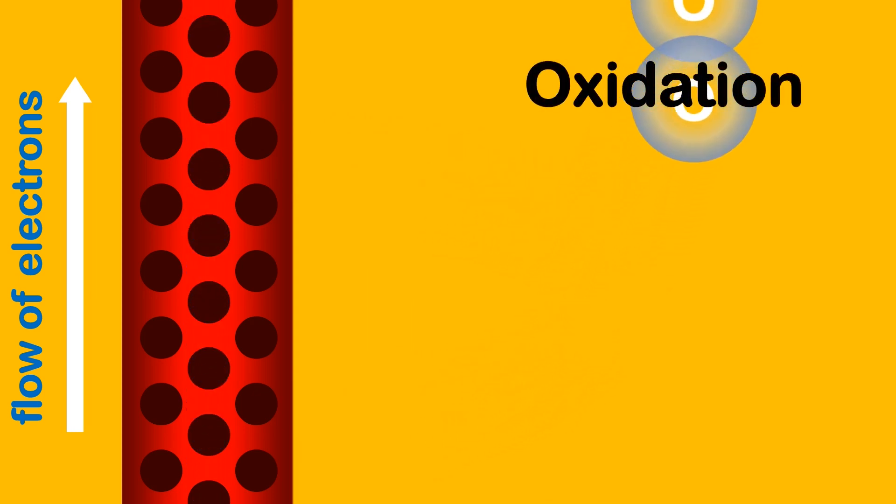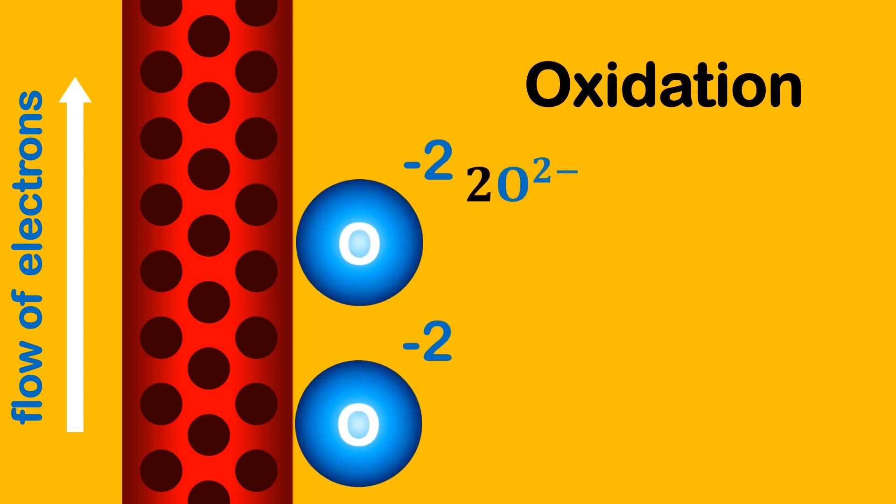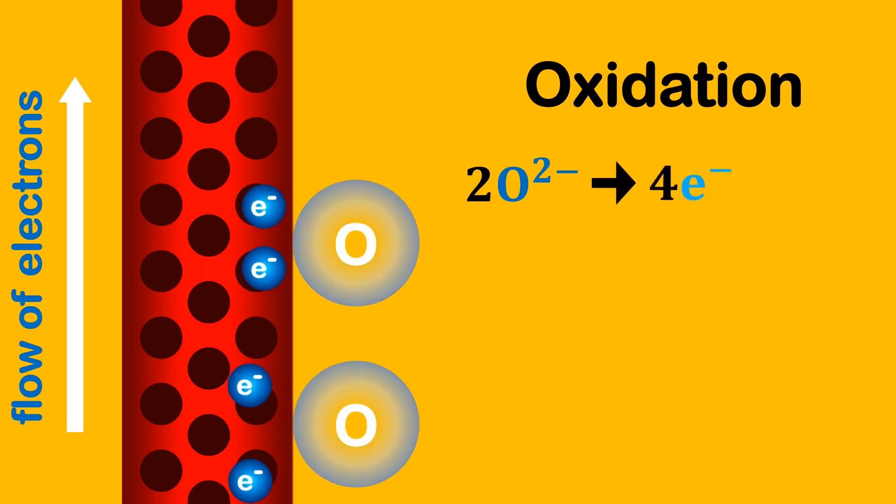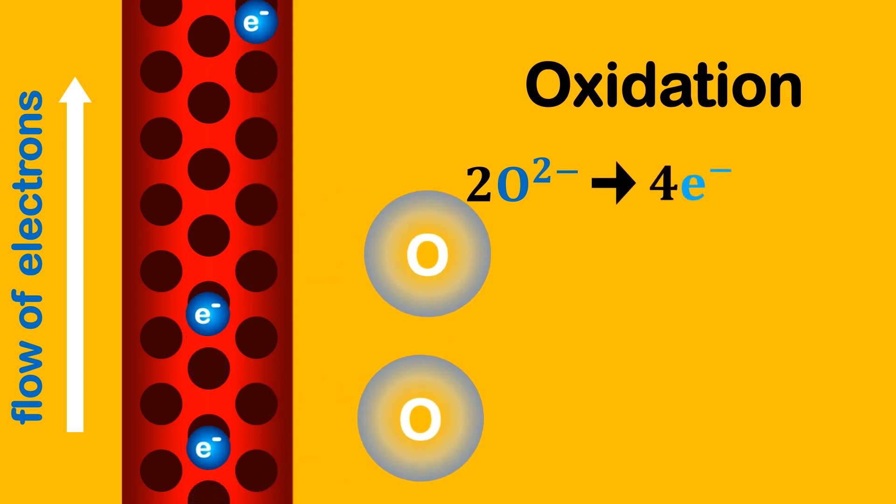When a negative ion loses electrons, this is called oxidation. This ionic half equation shows two minus 2 oxygen ions losing a total of 4 electrons to become a neutral oxygen molecule.